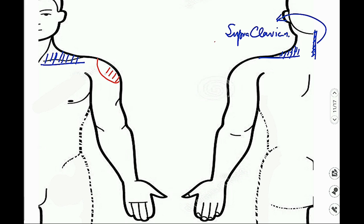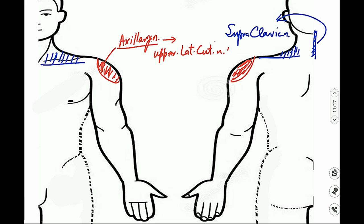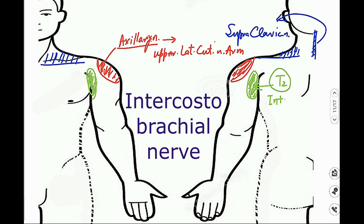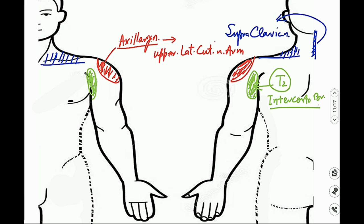The skin above the shoulder joint, above the deltoid muscle, is supplied by the nerve of the deltoid — the axillary nerve — via its cutaneous branch known as the upper lateral cutaneous nerve of the arm. The skin at the upper medial aspect of the upper limb is a special area: its innervation is not through the brachial plexus but through the T2 spinal nerve, via branches known as the intercostobrachial nerves.